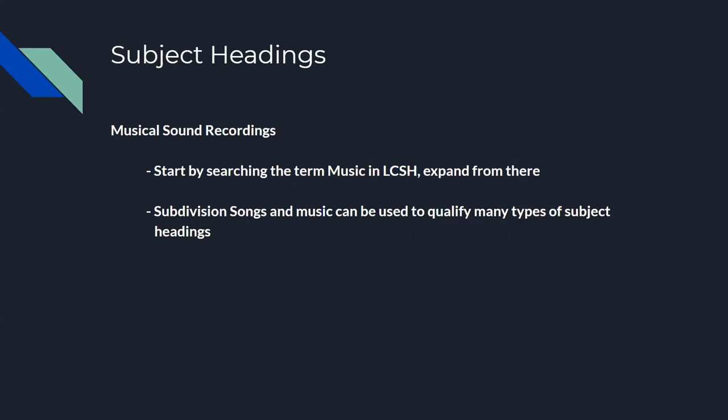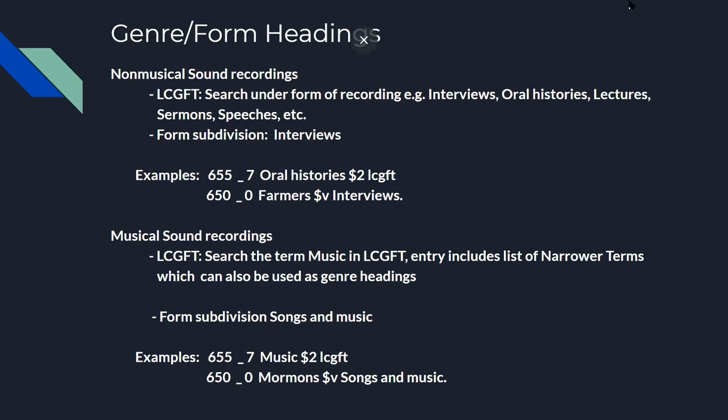The subdivision 'songs and music' can be used to qualify many types of subject headings as topical or form. For genre headings for non-musical sound recordings, search the Library of Congress Genre/Form Terms database. Common genre terms available include interviews, oral histories, lectures, sermons, and speeches. For musical sound recordings, start by searching the LCGFT database for music. The entry includes a list of narrower terms that can lead to additional genre headings. The most common form subdivision is 'songs and music' for musical sound recordings.